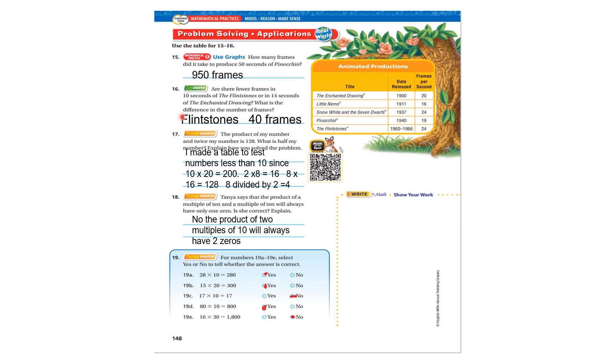Number seventeen, I had a lot of parents contact me about this. I'll go over the answer. If you got it wrong, don't worry about it. The product of my number is twice the number of one hundred and twenty-eight. What is half of my number? Explain how you solve the problem. Well, I made a table to test the number less than ten, since ten times twenty is two hundred. Two times eight equals sixteen. Eight times sixteen equals one hundred and twenty-eight. Eight divided by two equals four. Don't worry if you didn't get that right. That was hard for me to figure it out, too.